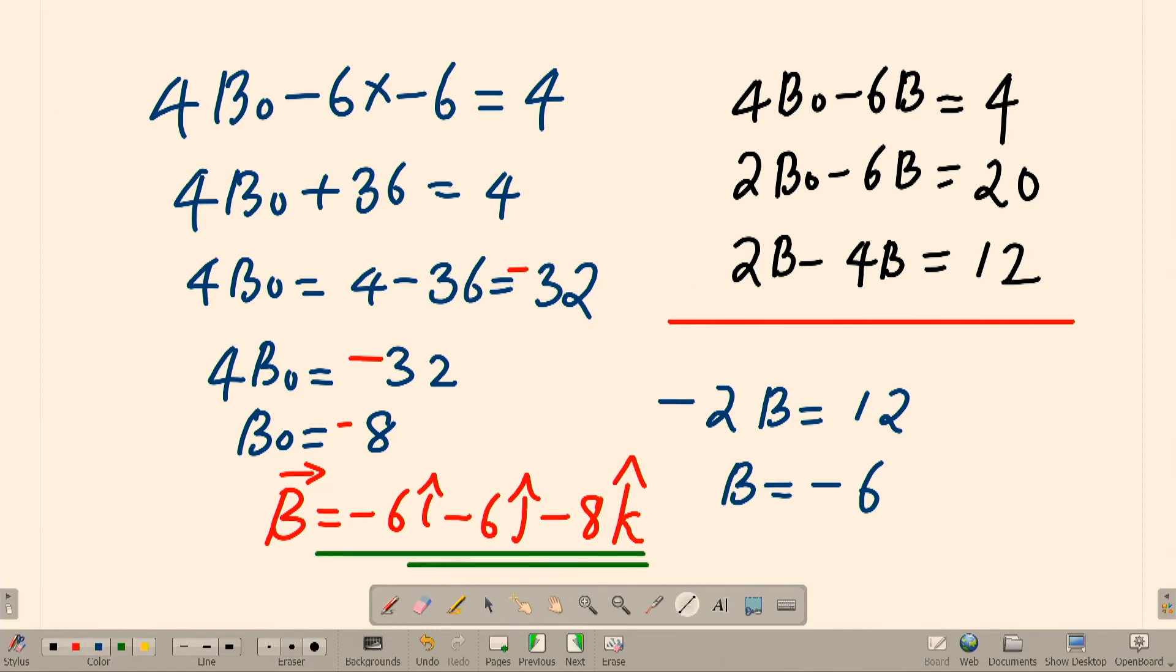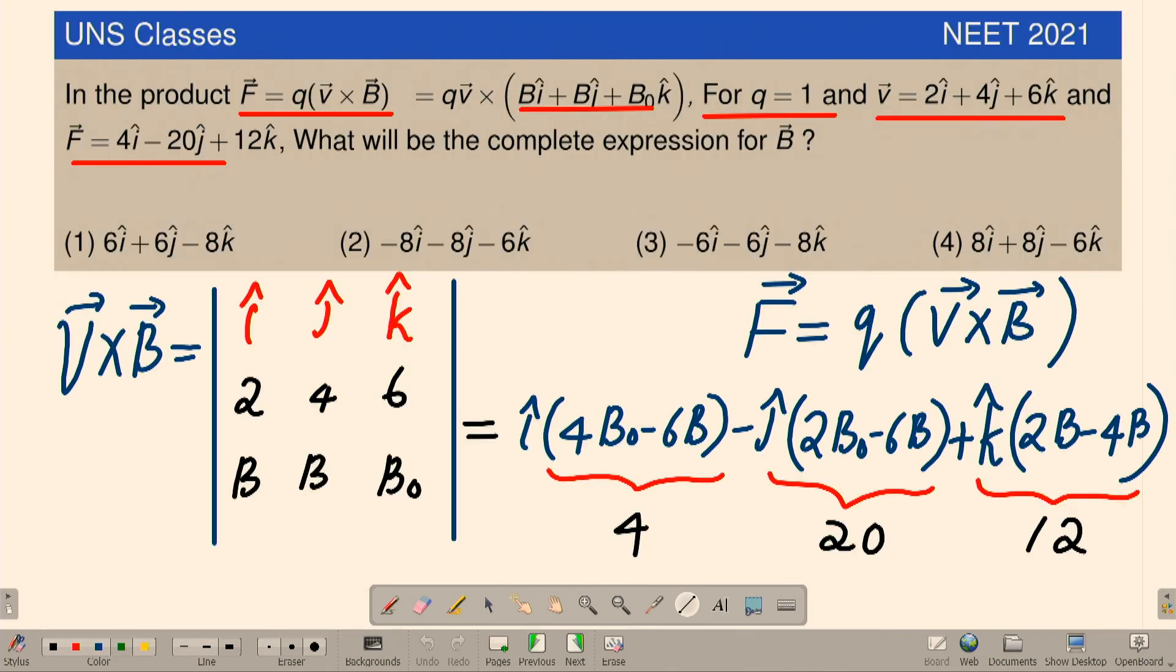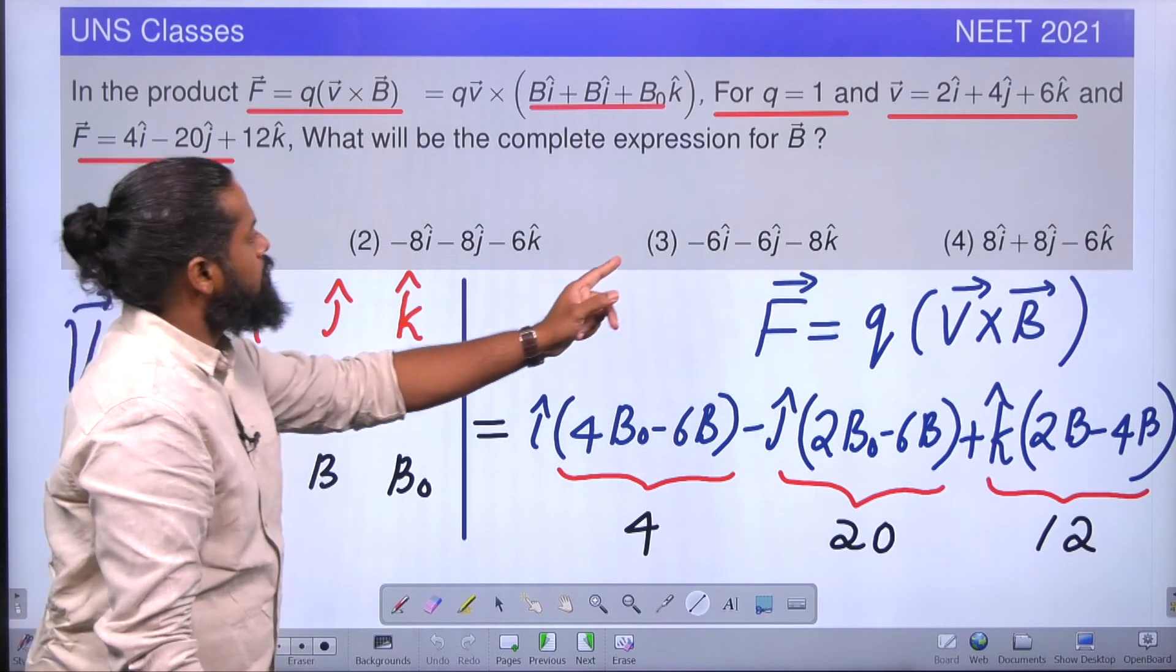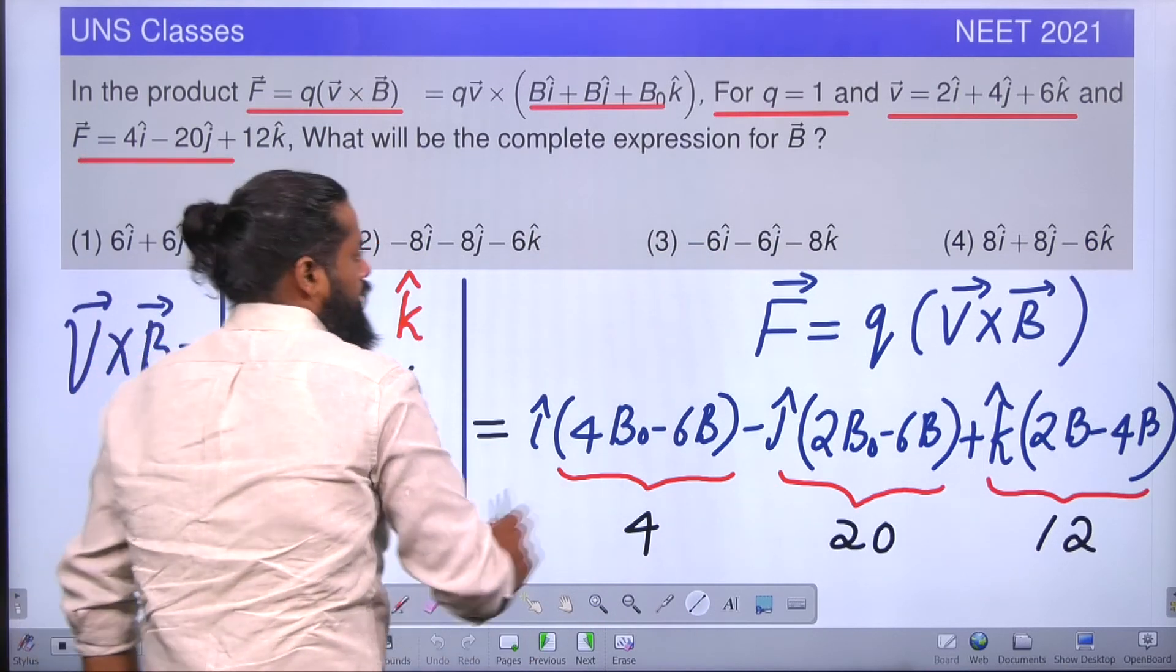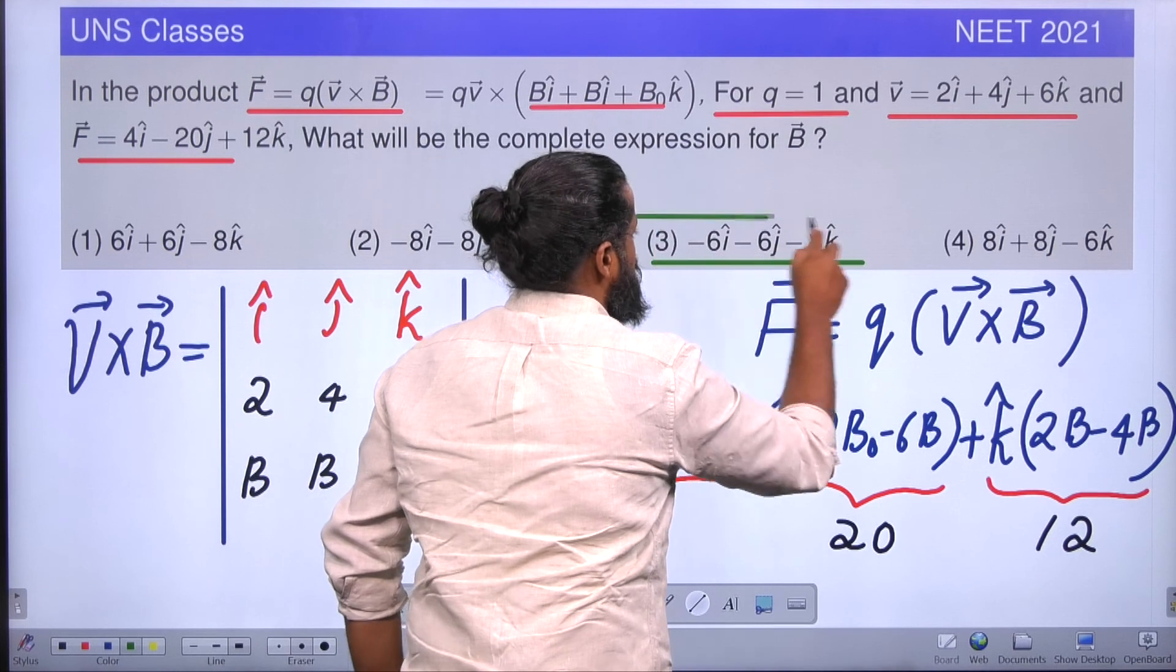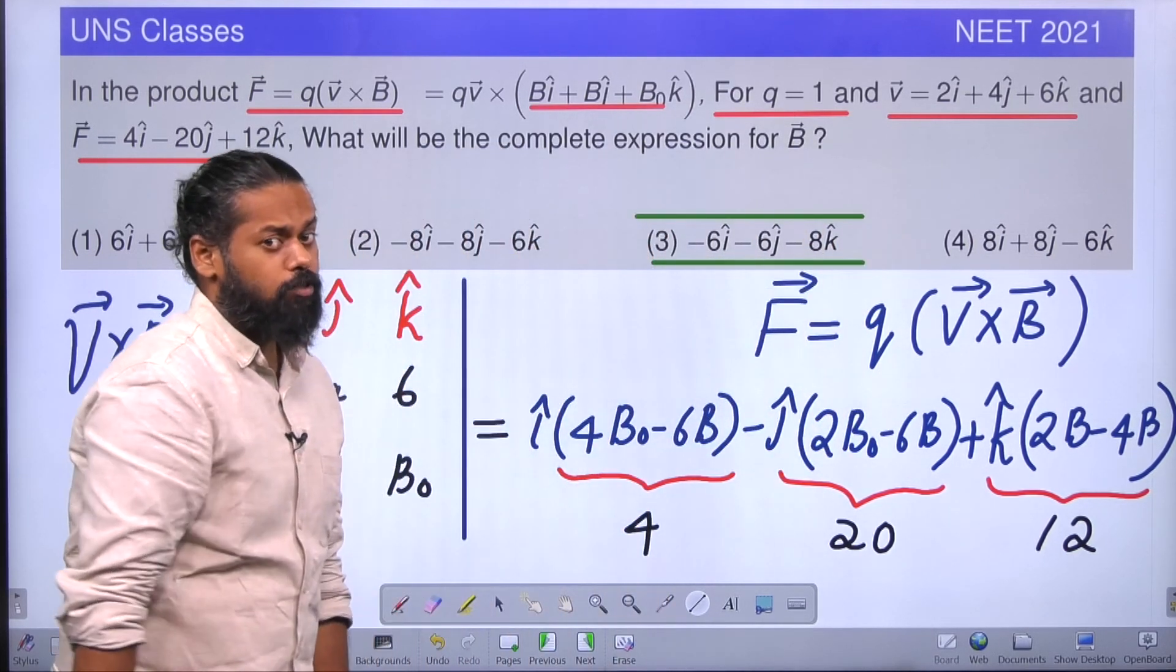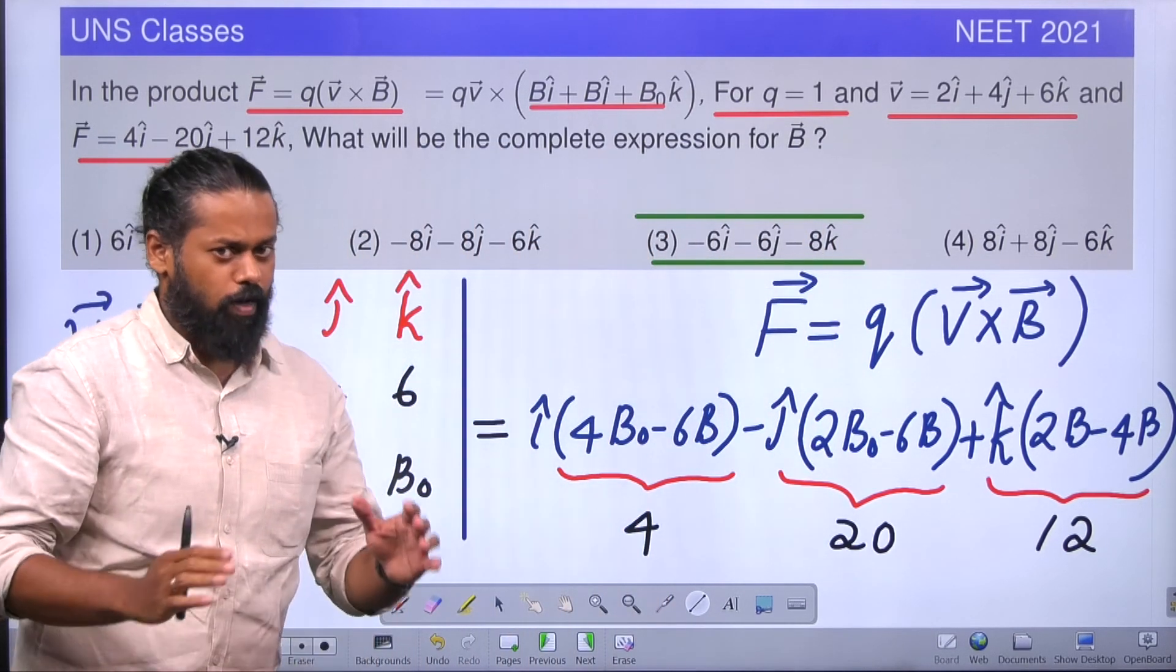Let us go back to the option. Which one is the correct option? All of you see here: -6i - 6j - 8k. So this is the correct answer for this question. This is a previous year NEET 2021 question. I hope all of you understood this.